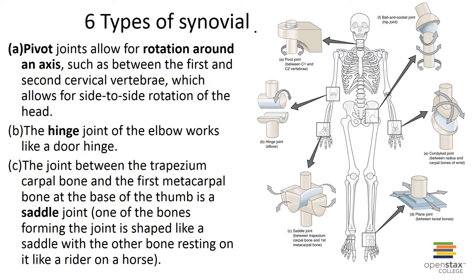There are six types of synovial joints: pivot, hinge, saddle, plane, condyloid, and ball-and-socket. Each type is described based on the shape of the articulating surfaces of the bones. A pivot joint is where the rounded end of one bone protrudes into a sleeve or ring composed of bone or ligament; the proximal radioulnar joint and the dens of the axis to the atlas are examples.